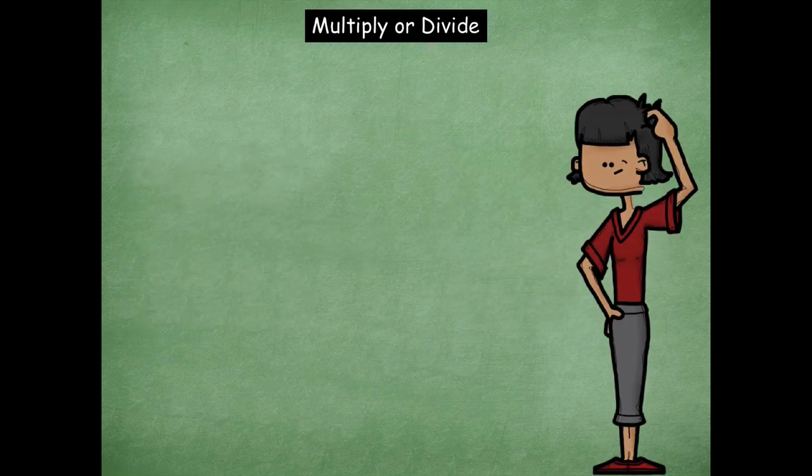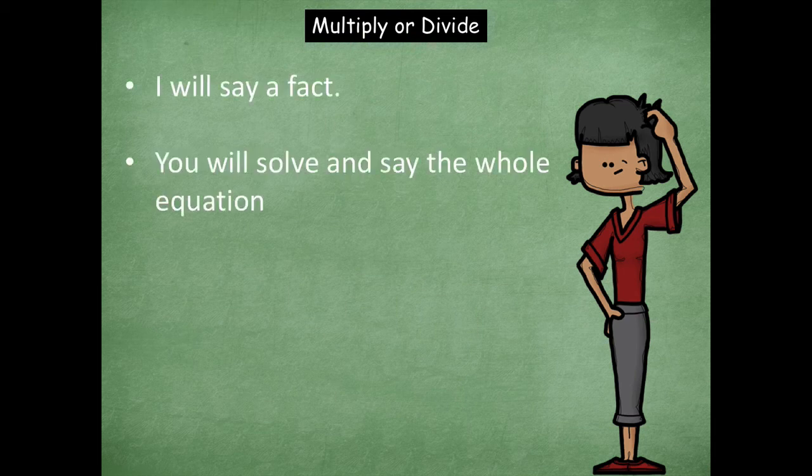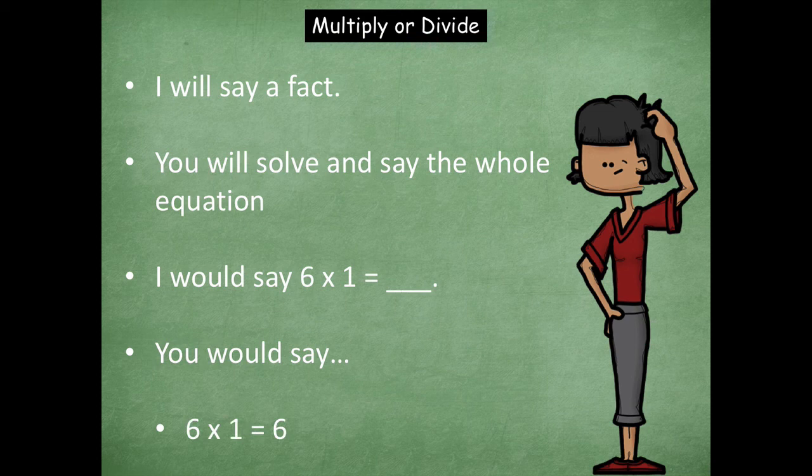So our next activity that we're going to do is we're going to multiply or we're going to divide. So I'll say a fact, you will solve and say the whole equation. So I would say 6 times 1, and you would say 6 times 1 equals 6. Now this one just happens to have an example with one of the factors as 1, but not all of them are going to be as simple as that one.